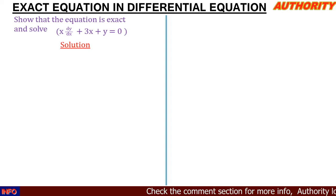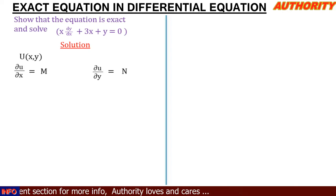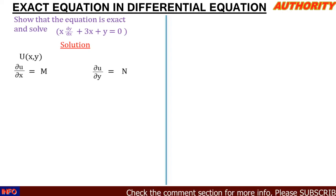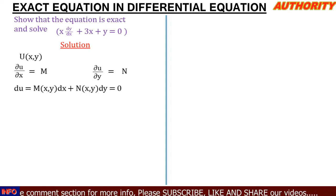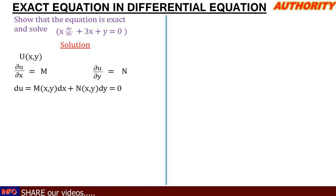Assuming we have a function u of x and y, and when we differentiate this function u partially with respect to x, we get another function — let's call it M. And when we differentiate u partially with respect to y, we get another function — let's call it N. The sum of these partial derivatives gives us: du = M(x,y)dx + N(x,y)dy = 0, which is a differential equation.